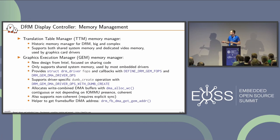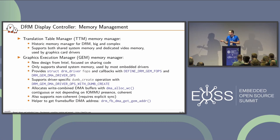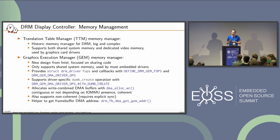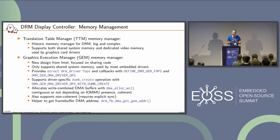GEM allocates DMA buffers using dma_alloc_wc (write-combined, a form of coherent memory). It checks for an IOMMU: if present, it allocates non-contiguous pages with a virtual memory mapping; if not, it uses contiguous memory. It also supports non-coherent allocations where you manage cache yourself, but coherent memory is preferred in the vast majority of cases. A helper function provides the DMA address for a specific frame buffer so drivers can configure the hardware to read pixel data.